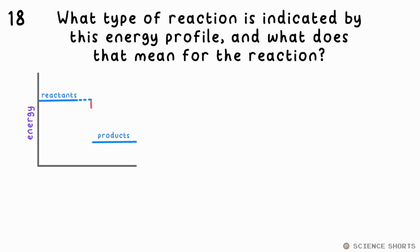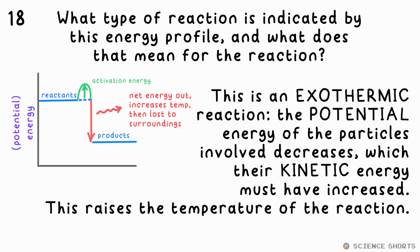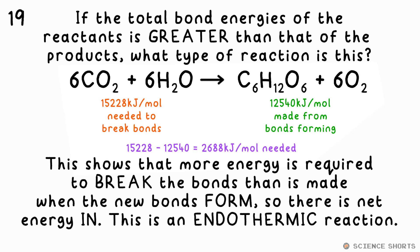What kind of reaction does this energy profile represent, and what does that mean about the temperature of the reaction? This is an exothermic reaction — the y-axis is technically potential energy, and as that's decreasing, the kinetic energy must be increasing, so the temperature of the reaction must be getting hotter. If the total bond energies of the reactants are more than that of the products, more energy is required to break the bonds than is released when the new ones form — that's net energy into the reaction, so this is an endothermic reaction.